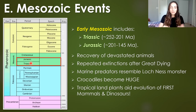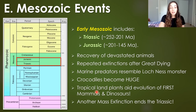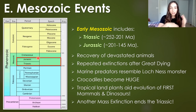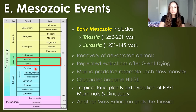Dinosaurs evolved in the Triassic period — the first period in the Mesozoic — as did mammals. So we'll talk a lot about mammals as well as dinosaurs today. We also had a mass extinction in the Triassic period at the Triassic-Jurassic boundary. Today's video is all about the land plants and animals during these two periods.